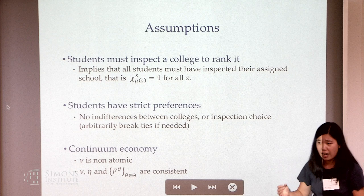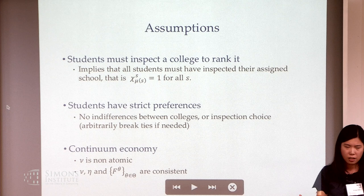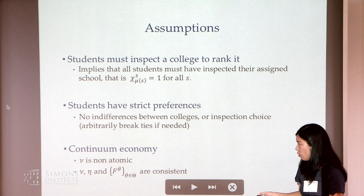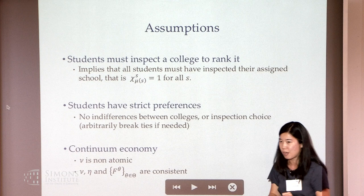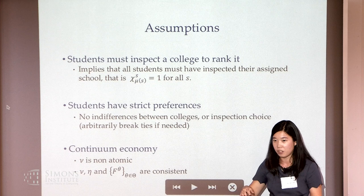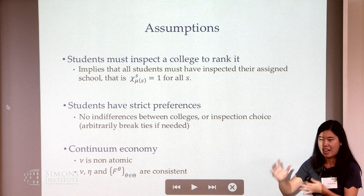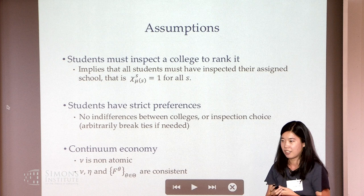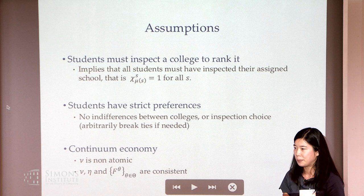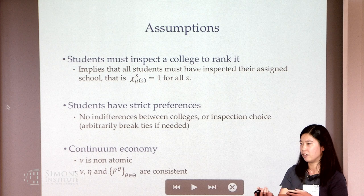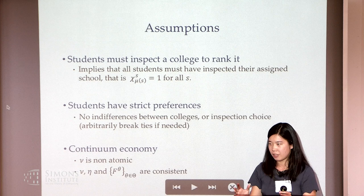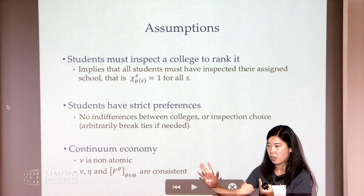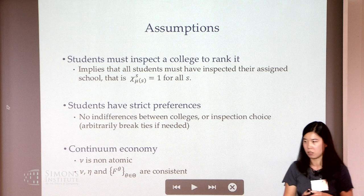We assume a continuum economy where students are non-atomic. We also have a consistency condition, which means there's no aggregate uncertainty about aggregate values: for each initial type theta, the empirical distribution of actual values among students of that type exactly equals the prior F_theta. You can think of this as a finite number of theta types, with a continuum of students spread over the priorities appropriately.